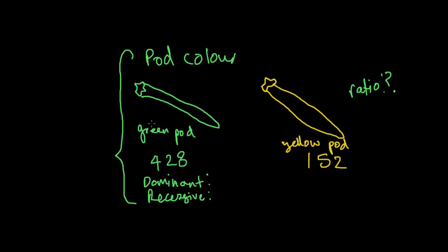Once again, our dominant trait will be the one with the higher number. That is because it has a higher probability, higher chance, and hence should be the dominant trait if the experiment was correctly carried. So in this case, we have our green pod as our dominant trait. So I'm just going to write green pod. And that leaves the yellow pod to be recessive.